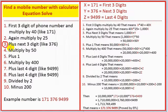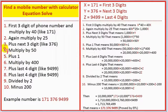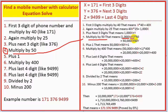Step three: plus the next three digits, like 376. That means Y equals 376, so the result is 1000x plus Y. Step four: multiply by 50, giving 50,000x plus 50Y.